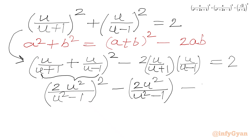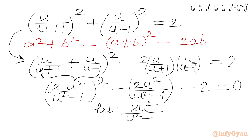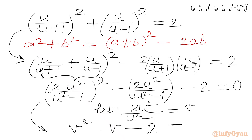If I bring 2 to the LHS I write minus 2 equal to 0. This is a quadratic equation in 2u²/(u²−1). So it is better to let v equal 2u²/(u²−1), and our quadratic equation becomes v² minus v minus 2 equal to 0.